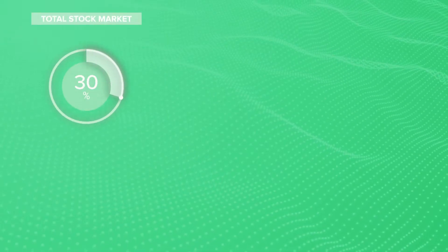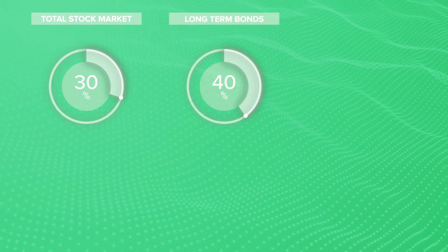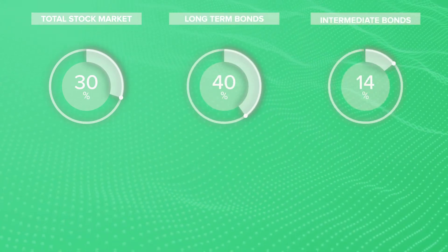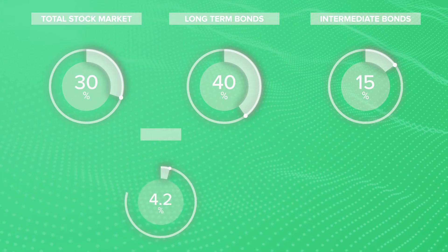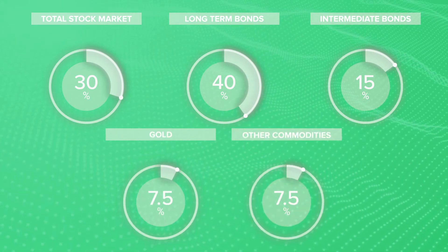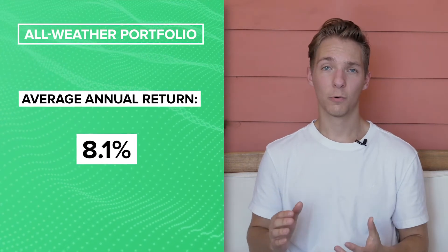The all-weather portfolio is split among asset classes that perform well in each of those environments. The portfolio is made up of 30% stocks, 40% long-term bonds, 15% intermediate-term bonds, 7.5% gold, and 7.5% other commodities. In the last 10 years, this portfolio has given an average annual return of 8.1%. That's certainly not bad, especially considering any time that the portfolio has posted negative returns, they've still been much less than the negative returns of a given asset class. The reasoning behind this is that the investment is evenly distributed among very different asset classes. If one underperforms, the rest of the portfolio will help cushion the blow and hopefully keep your returns in the green.